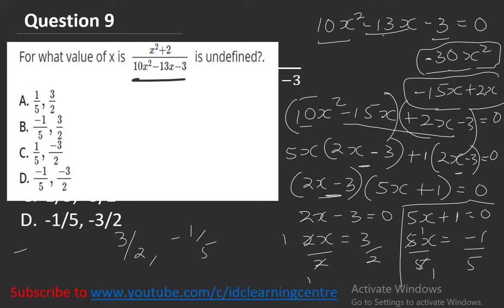We can write minus 1 over 5 and 3 over 2. The right option is B.